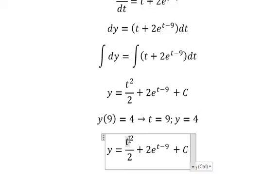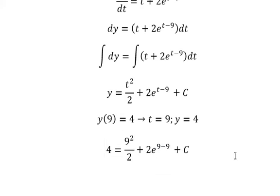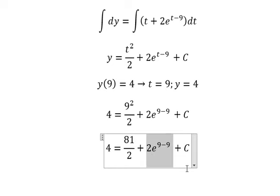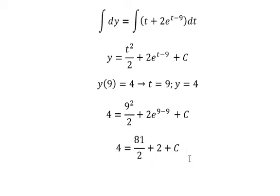So we put t equals to number 9, y equals to number 4, and you will get about 81 over 2. This one you got about 2, so we can find the value of C in here.